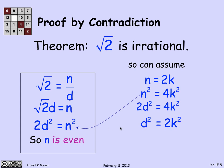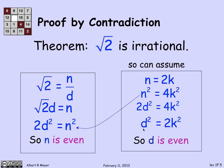Of course, I can cancel 2 and get that d² = 2k². Again, the right-hand side is divisible by 2, so the left-hand side is divisible by 2. d² is even, and therefore d is even. And we've completed the proof as claimed: n and d both have 2 as a common factor, contradicting the fact that they're in lowest terms.